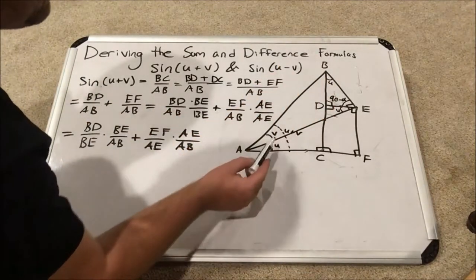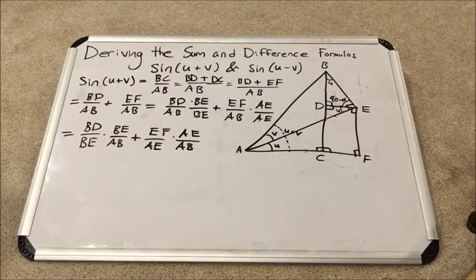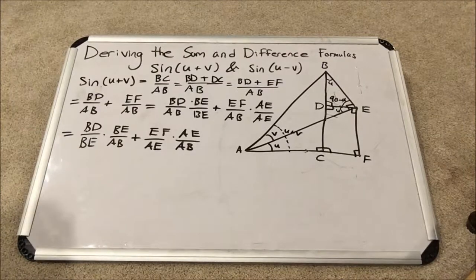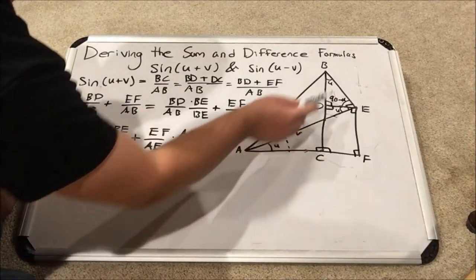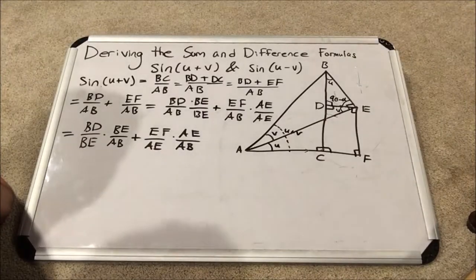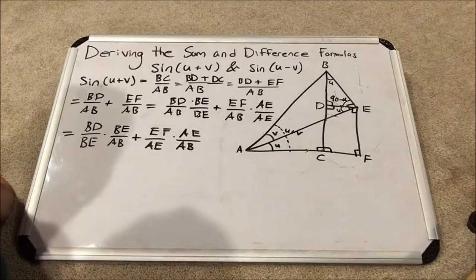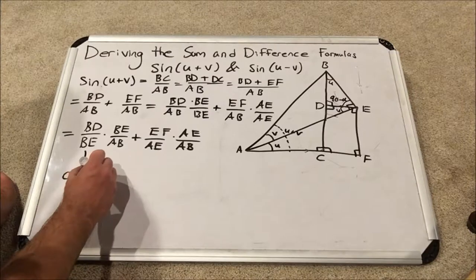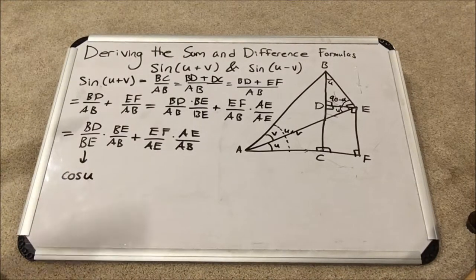So that angle U is the same as this angle U, which leads us back to here, our very important fractions. Let's talk about what BD over BE is. So, with respect to angle U, BD over BE would be adjacent over hypotenuse, which makes BD over BE equal to cosine of U. Now we're starting to get somewhere with trig instead of all these crazy letters.